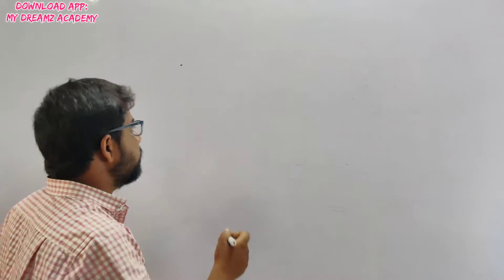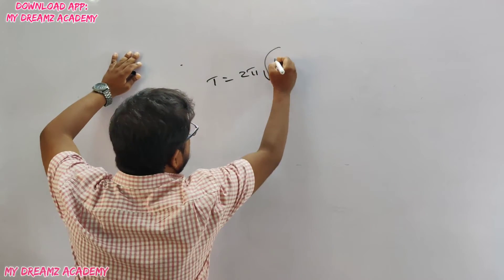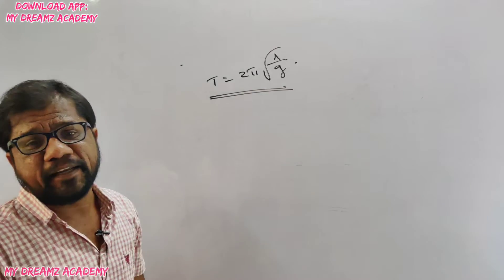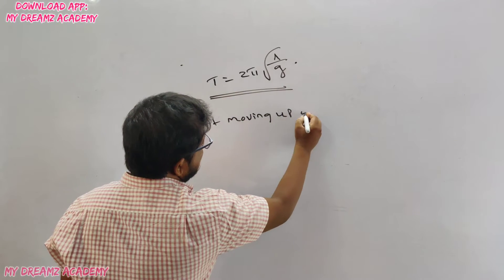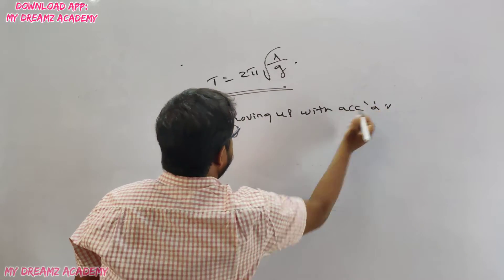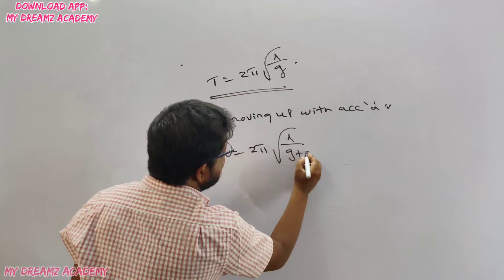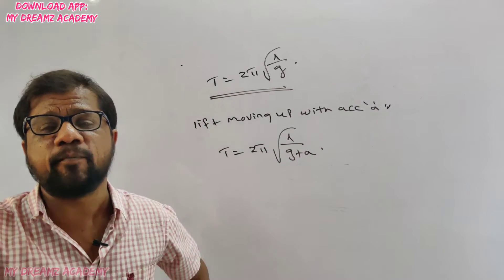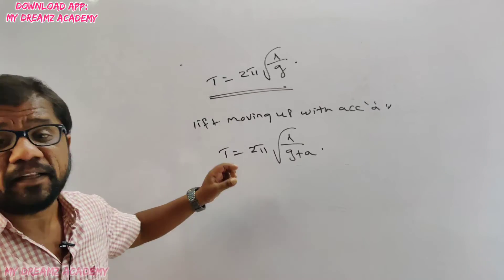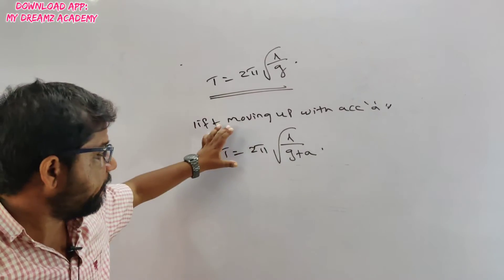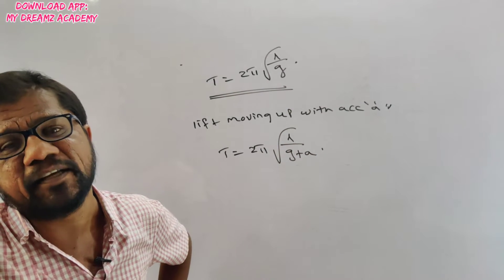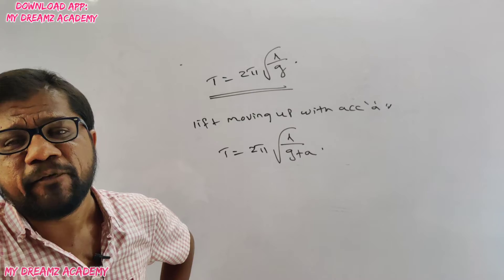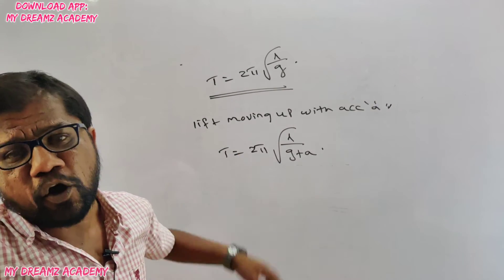The next model of question is based on a simple pendulum placed in a lift. Normally T = 2π√(l/g). If the lift is moving up with acceleration a, the effective acceleration increases to (g + a), so the new time period is T = 2π√(l/(g+a)). Since acceleration increases, the time period decreases. A 2018 exam question asked: when a simple pendulum is placed in a lift moving upward with acceleration a, what happens to its time period? Answer: it decreases.